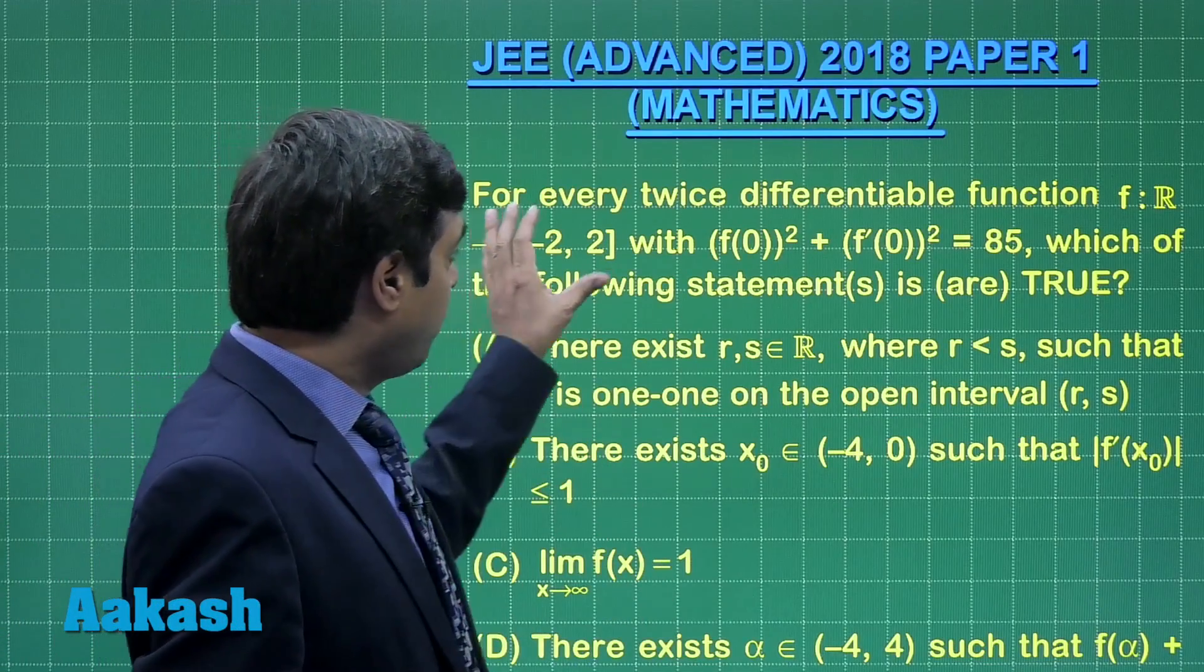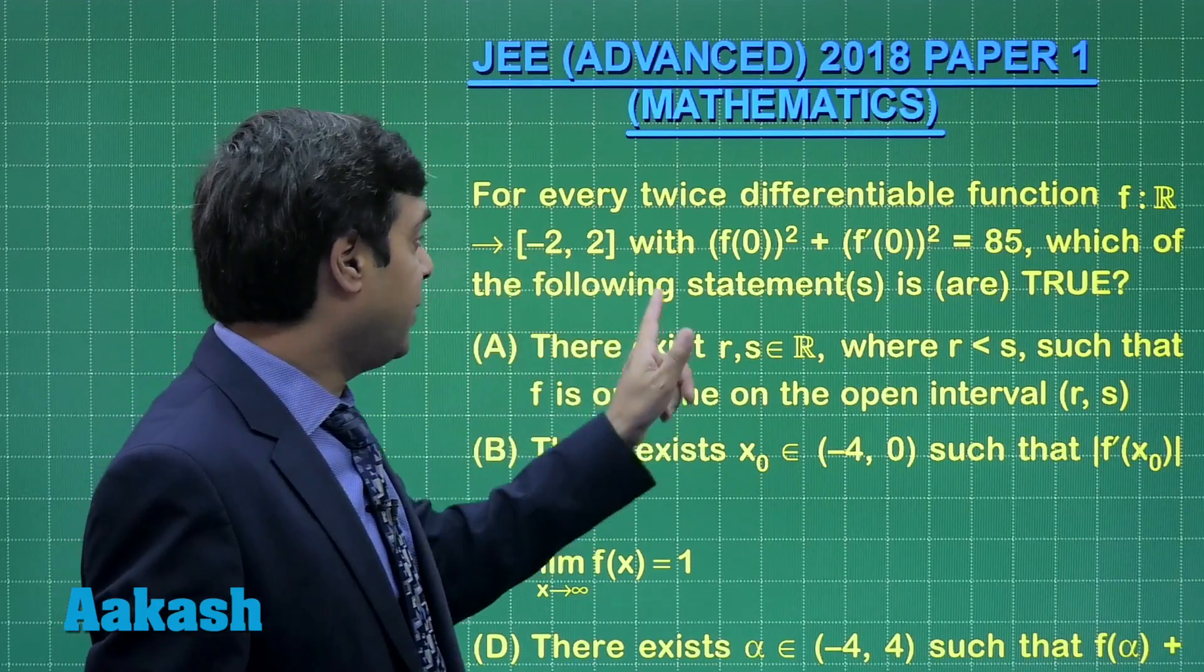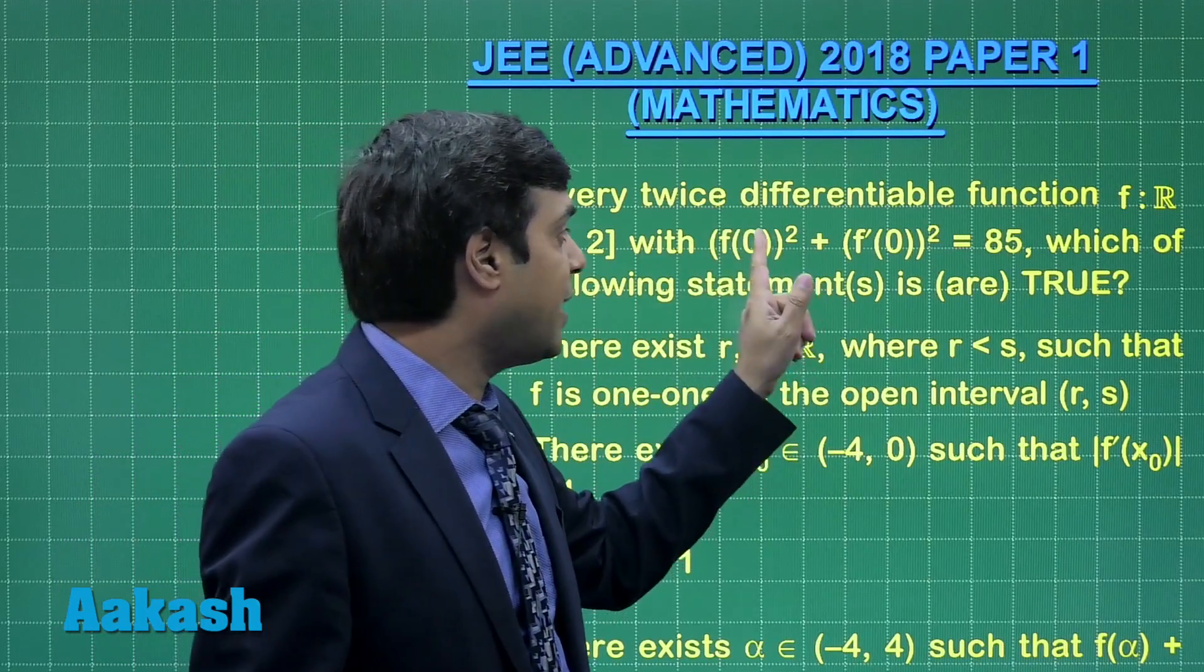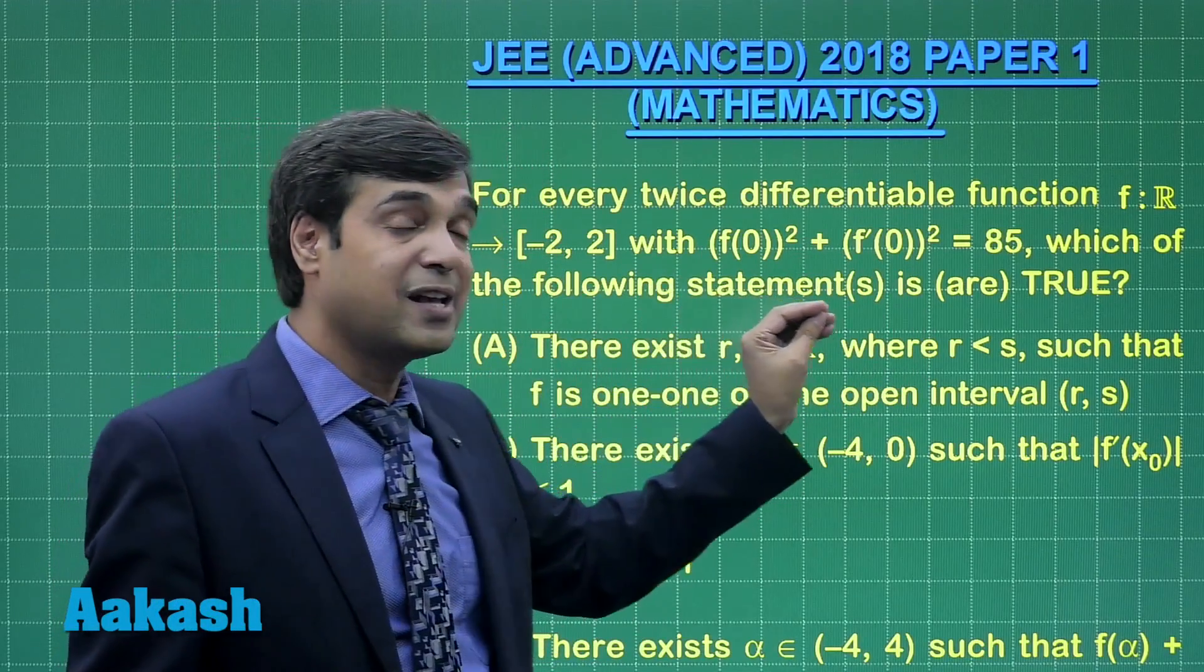Let us take question number 4. For every twice differentiable function f with f(0) whole square plus f'(0) whole square equals 85, which of the following statements are true.